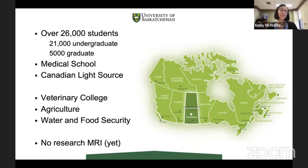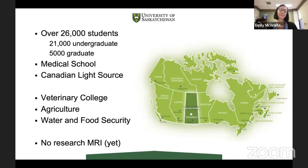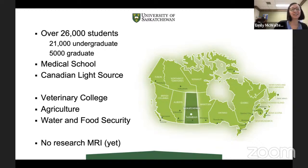The University of Saskatchewan is quite a large university with 26,000 students, and we do have a medical school. A highlight is the Canadian Light Source, which is a synchrotron — the only one in Canada. Other strengths include the vet college, college of agriculture, and institutes of water and food security. One challenge I encounter here is that we don't have a dedicated MRI for research; I have to squeeze my research in on the clinical magnets. Post-COVID, clinical backlogs and staffing at the MR are a real barrier.